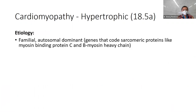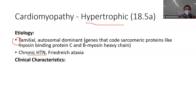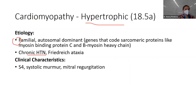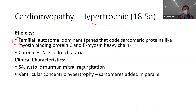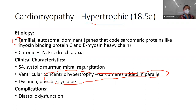Hypertrophic cardiomyopathy has a large familial autosomal dominant component — think genetic first — and can also be caused by chronic hypertension. Clinical characteristics include an S4 sound (versus S3 in dilated) and mitral regurg. This is concentric hypertrophy — sarcomeres added in parallel. Diastolic dysfunction results because there's less room for blood to fill the ventricle, so less blood moves through the heart per pump.